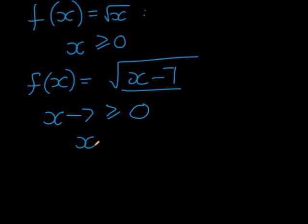That gives me that x, I add a 7 on both sides to solve for x, x must be larger or equal to 7, and that makes sense. If I have x and I subtract something from it, whatever I subtract, the answer must still be bigger than 0.